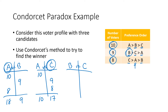For B versus C: the 10 voters at the top vote for their second choice, B, because they can't vote for A. The nine voters in the second row vote for B, and the eight voters who like C best vote for C. So B wins that matchup 19 to 8. We had three matchups and each was won by a different candidate — A beat B but lost to C, B beat C but lost to A, C beat A but lost to B. So there is no winner.